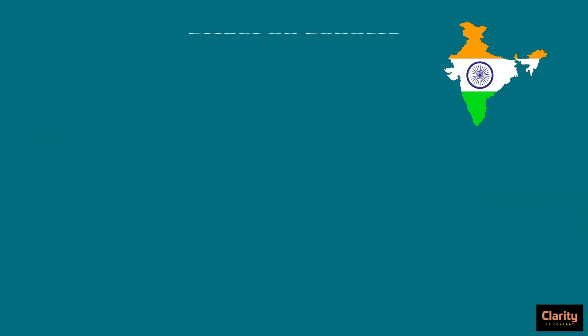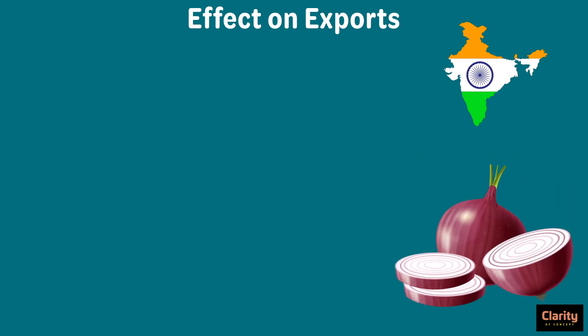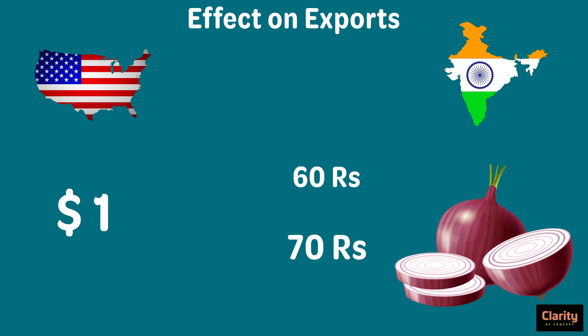What about the effects of inflation on exports? Consider an onion farmer in India who exports onions to foreign countries. For 1 kg of onions, the farmer receives 1 dollar, that is 60 rupees. With inflation, assume that 1 dollar becomes 70 rupees. For the export of 1 kg of onion, the foreigner still pays 1 dollar to the farmer, but when converted, the farmer gets 70 rupees. This encourages the farmer to export more and more. Hence, the exporting sector benefits here.